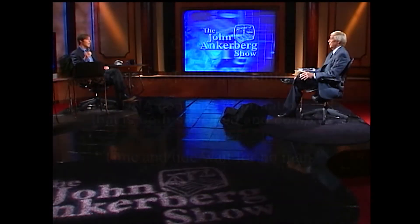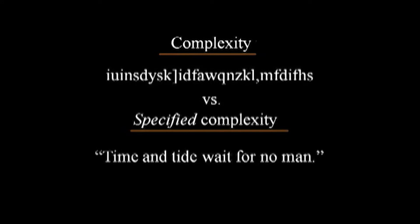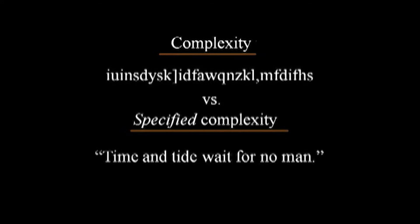When we talk about the DNA enigma — the mystery surrounding the origin of the information needed to build the first cell — we're not just talking about information in the mathematical sense of improbability like the first line on the slide. Instead, we're talking about information that is specified: the arrangement of characters matters to the function the string of characters performs, and that's what we have in DNA.